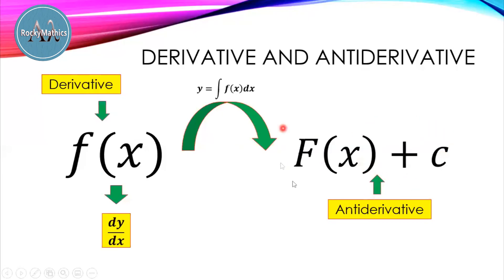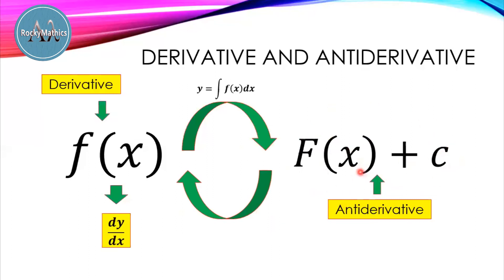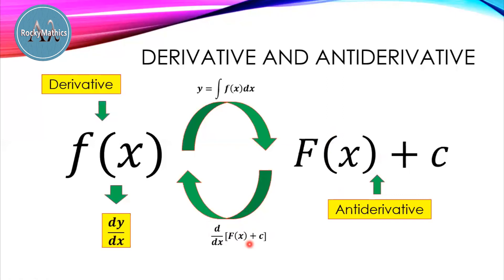Now, if we are going to reverse the process — if we have this F of x plus c general formula — how can we get the derivative? We can get the derivative by using the operation differentiation. So in other words, differentiation is the reverse process of integration, or integration is the reverse process of differentiation.